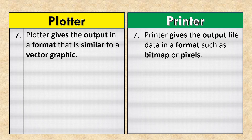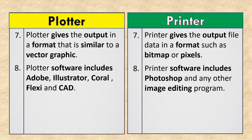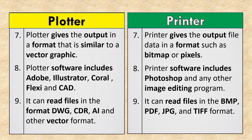Plotters give output in a format similar to vector graphics, while printers give output file data in a format such as bitmap or pixels. Plotter software includes Adobe Illustrator, CorelDRAW, Flexi, and CAD. Printer software includes Photoshop and other image editing programs. Plotters can read files in DWG, CDR, AI, and other vector formats, while printers can read files in BMP, PDF, JPG, and TIFF formats.